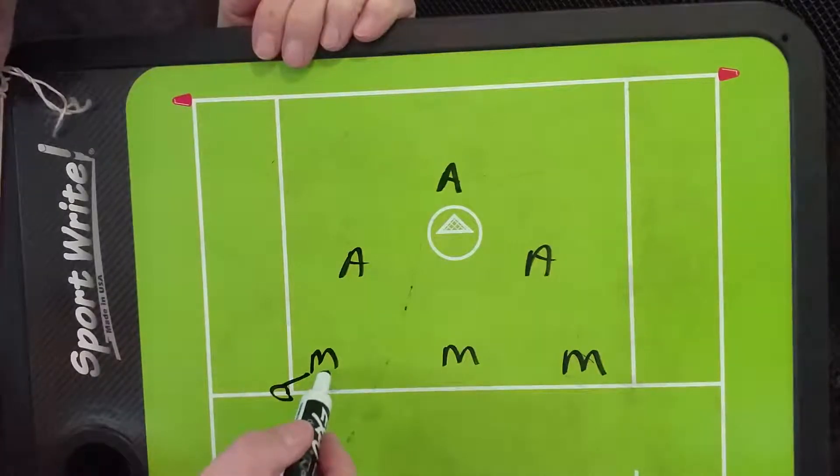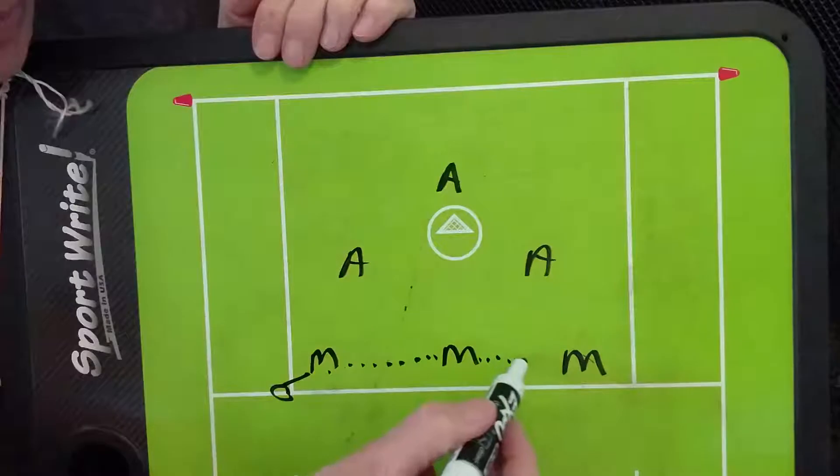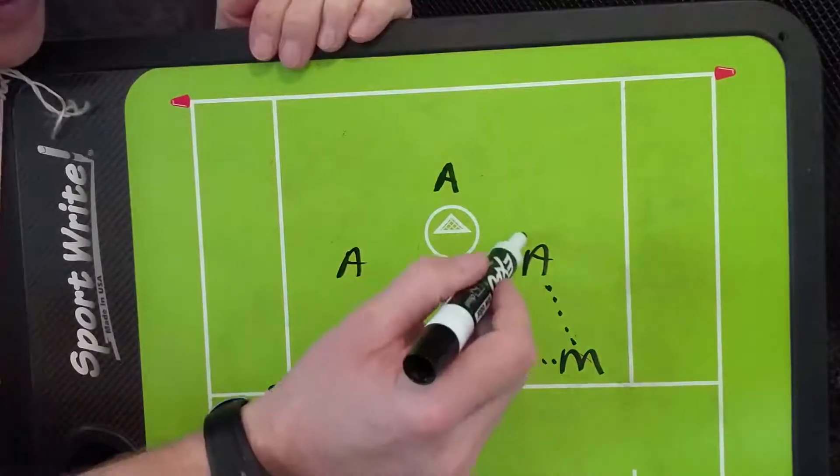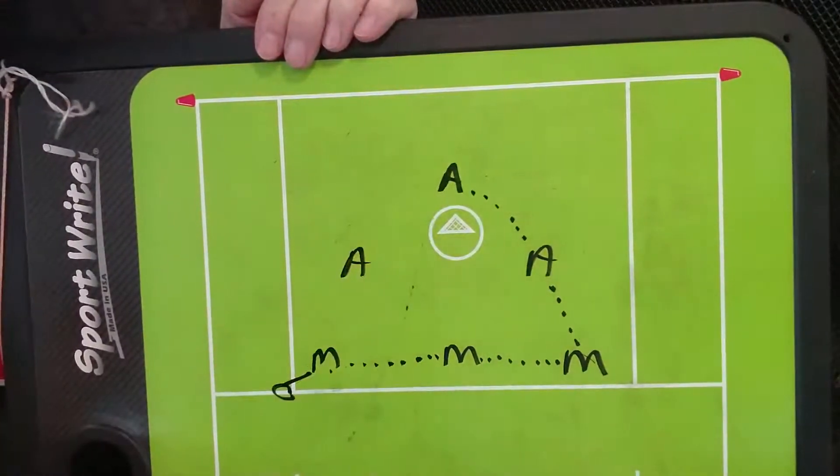Basically, what's going to happen is the midi's going to pass here, this midi's going to pass here, then the pass goes to here, then the pass goes back to X. And this is basically when the play starts.